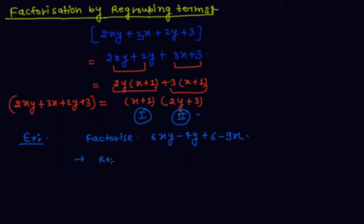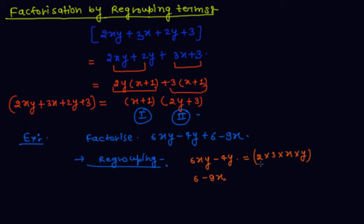Now think about regrouping. Regroup as (6xy minus 4y) and (6 minus 9x). For the first group, 6xy minus 4y equals 2·3·x·y minus 2·2·y, so 2y is common, giving 2y(3x minus 2).